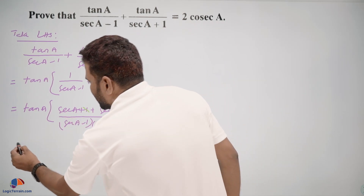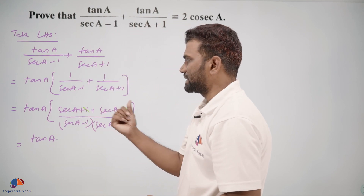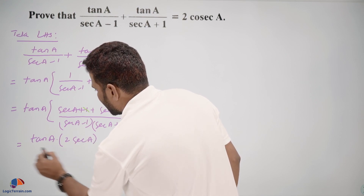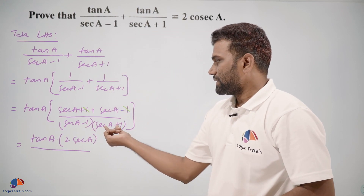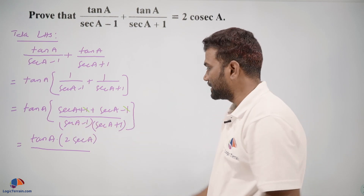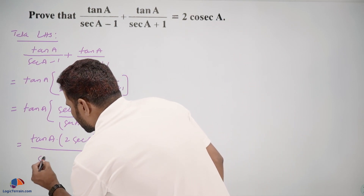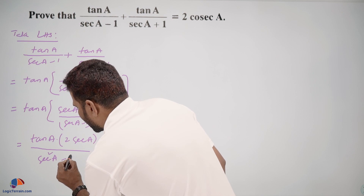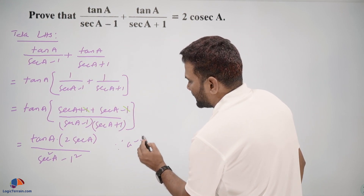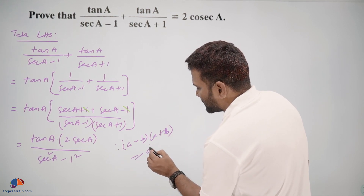The plus 1 and minus 1 cancel, leaving 2 secant A in the numerator. So we have tan A into 2 secant A, upon the denominator which looks like (a minus b)(a plus b), which is nothing but a squared minus b squared — that is secant squared A minus 1.